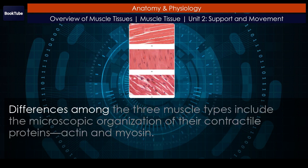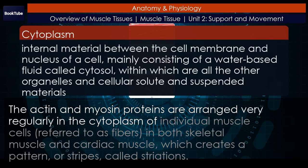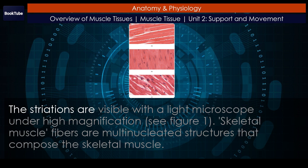Differences among the three muscle types include the microscopic organization of their contractile proteins, actin and myosin. The actin and myosin proteins are arranged very regularly in the cytoplasm of individual muscle cells, referred to as fibers, in both skeletal muscle and cardiac muscle, which creates a pattern, or stripes, called striations. The striations are visible with a light microscope under high magnification.